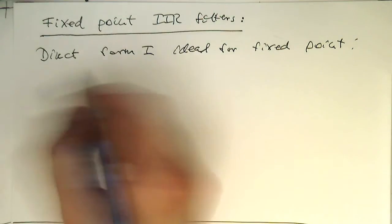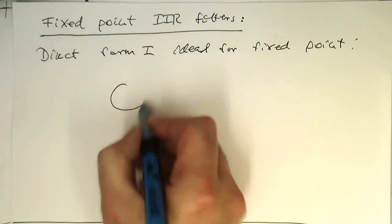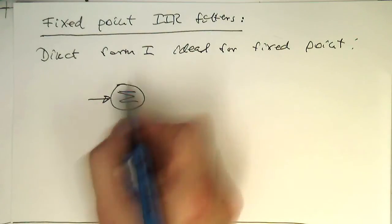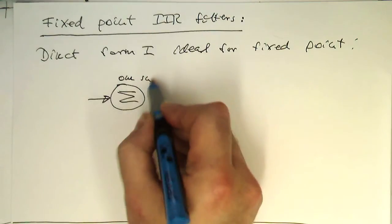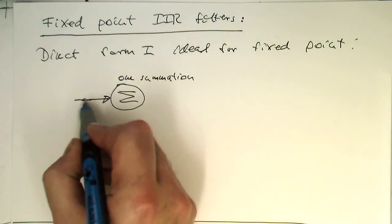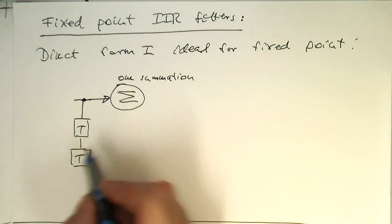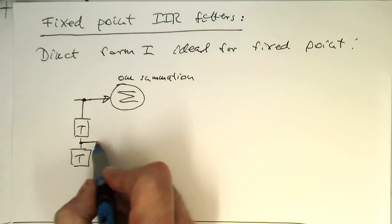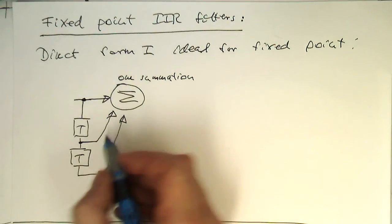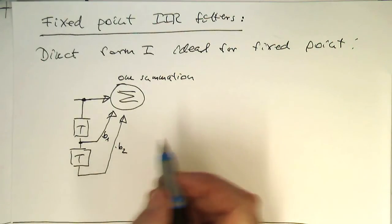So why is this the case? Let's have a look at the direct form again. We have direct form has only one summation node. So we have just one summation. But we have got two delay lines. We have got one delay line for the FIR part.